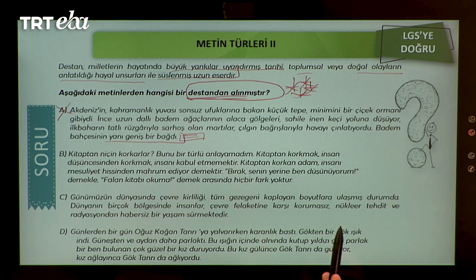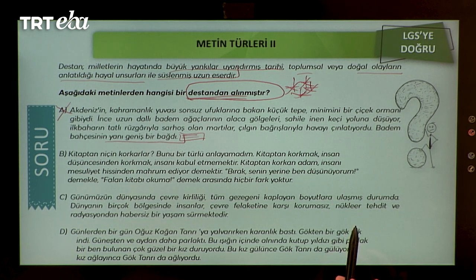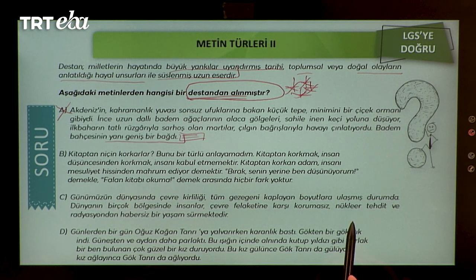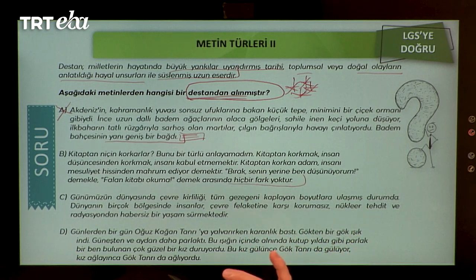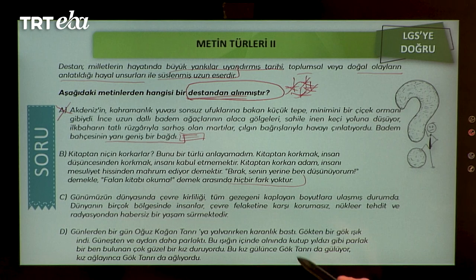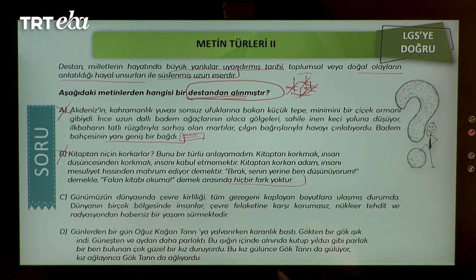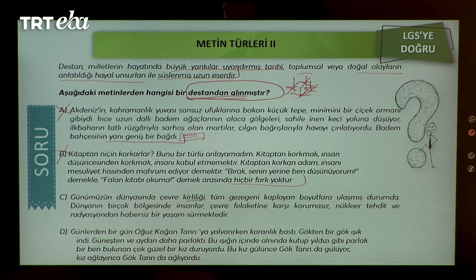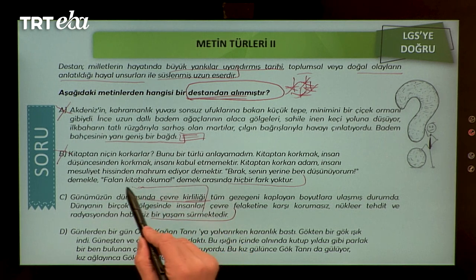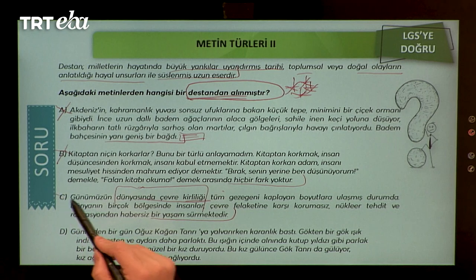B seçeneğinde 'Kitaptan niçin korkarlar?' diye başlayan metin bir düşünce yazısıdır; yazar samimi üslupla düşüncelerini dile getirmiş, kanıtlama amacı gütmemiş — denemeden alınmış olabilir. Destandan alınan metin değil. C seçeneğinde çevre kirliliği hakkında bilgiler verilmiş, yine bir düşünce yazısı — destanla alakası yok. C seçeneği de elenmiştir.